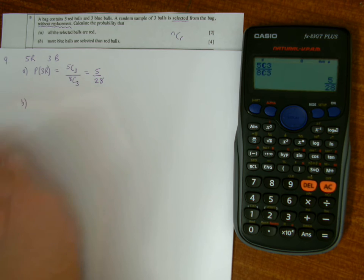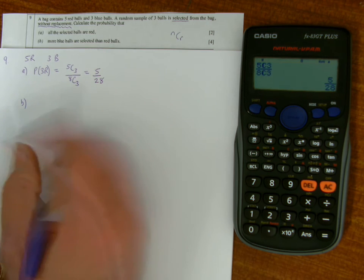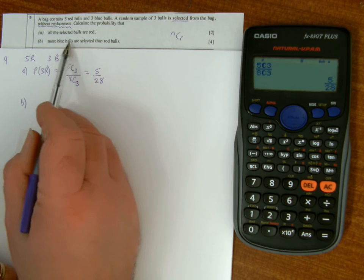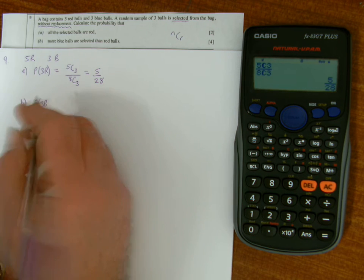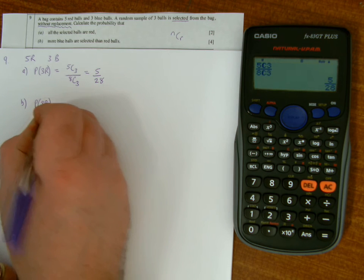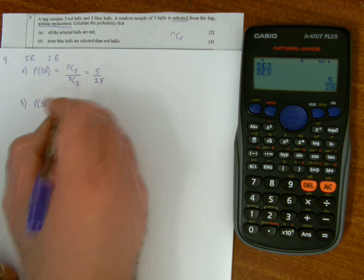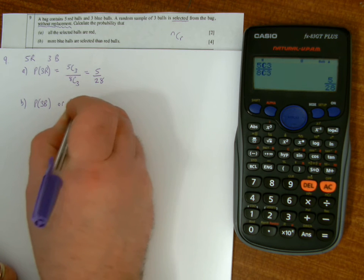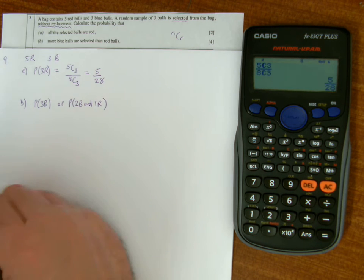Part B, I want more blue than red selected. So how could that happen? Well, if I have three blues and no reds, I've got more blue than red. Or if I have two blue and one red, I've got more blue than red. And those are the only two ways in which I can get more blue than red.